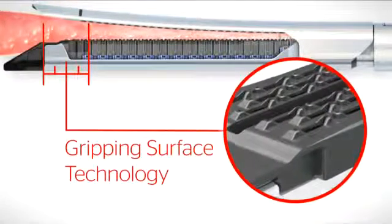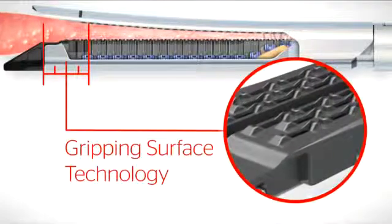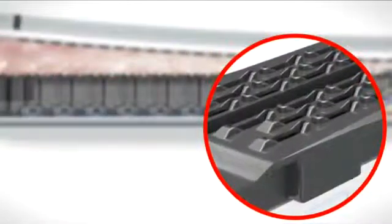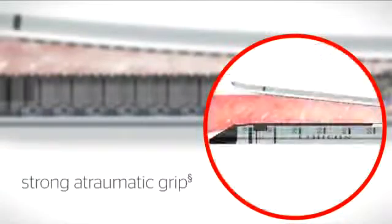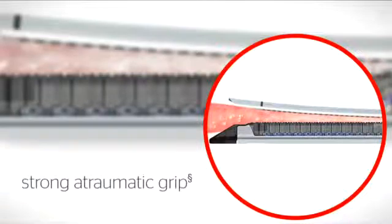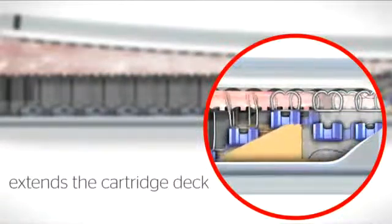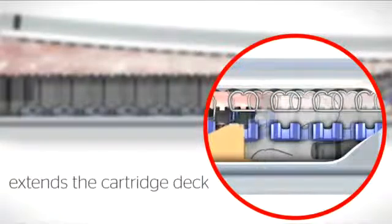The gripping surface technology that can be seen on the reload surface reduces the effects of tissue slippage in two ways. It provides a strong atraumatic grip on tissue during firing to reduce tissue movement, and it extends the cartridge deck to better hold and guide the staples toward the anvil pocket during firing.